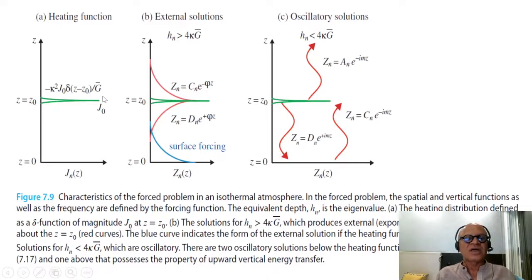So let's just look at the forcing specific case, where the forcing is prescribed as a direct delta function with the amplitude of J0, and that's the form of that function.